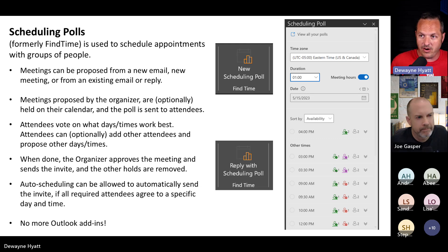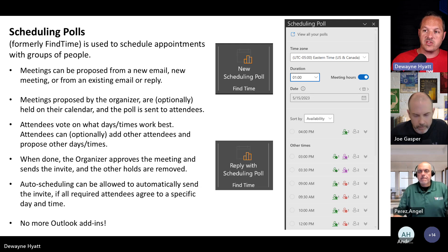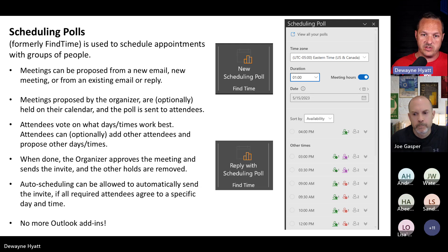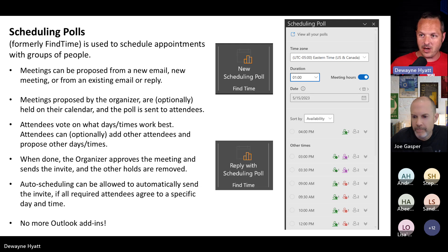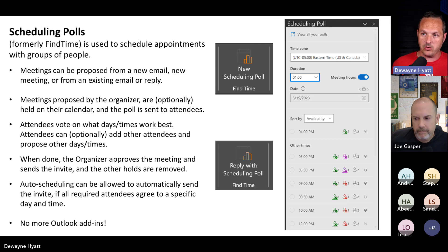If their calendar is up to date, you could find ideal times that would work for everyone you've invited, and then send out options that people can vote on. The organizer selects some times, those times are sent out to everyone on the recipients list. It's going to create a hold on your calendar as the organizer — if you leave something open too long, something else will probably come along and take it. Find Time will create a temporary hold for all the times you're letting people vote on, and whichever one wins, the organizer can approve it and it automatically fires off a Teams meeting to everyone on that list.